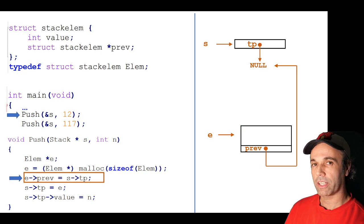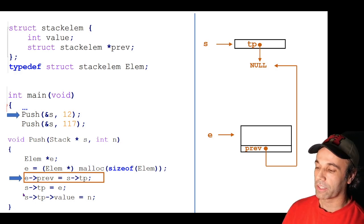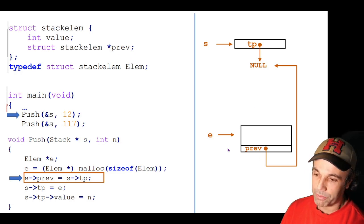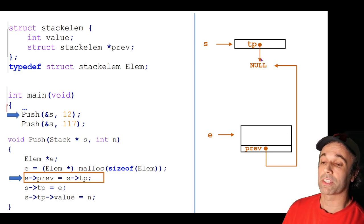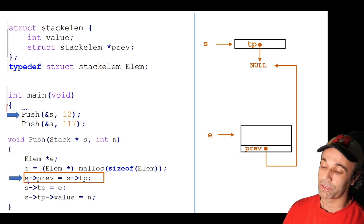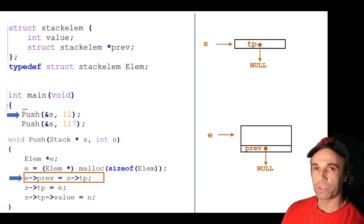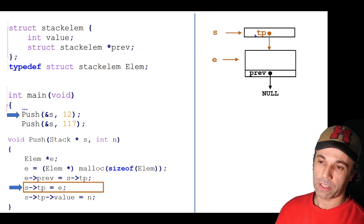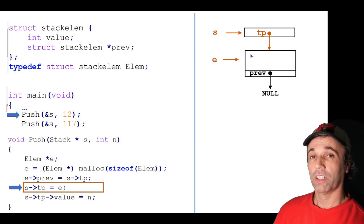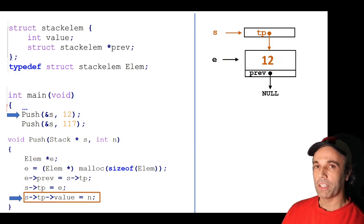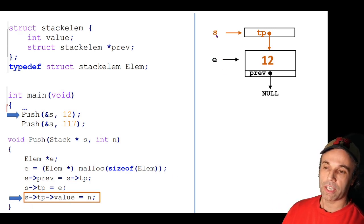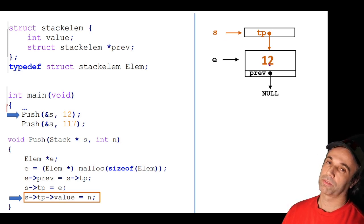We assign the memory location returned by malloc to E, so E is now pointing at this new element. At the moment, prev is uninitialized. This next line is really important: E arrow prev equals S arrow TP. That's the pointer inside the element — we assign it to what S TP was pointing at previously, which is currently null because there's nothing in the stack. So we're effectively assigning E prev to null, and E prev is now pointing at null. Then we assign S TP to E — S TP is now assigned to the memory location of this structure, so it's pointing to the new top. Finally we copy the value n, which was passed in as 12, into the new top: S TP arrow value equals 12.